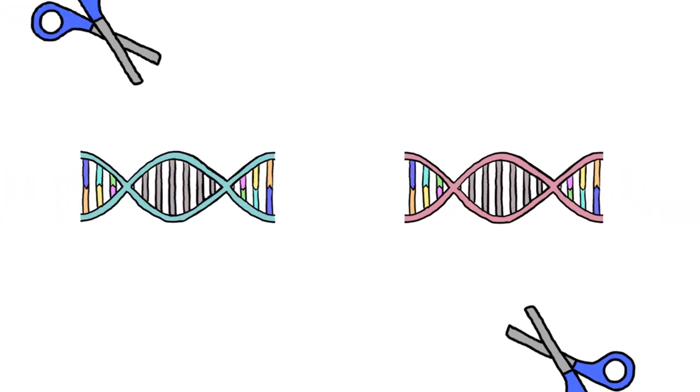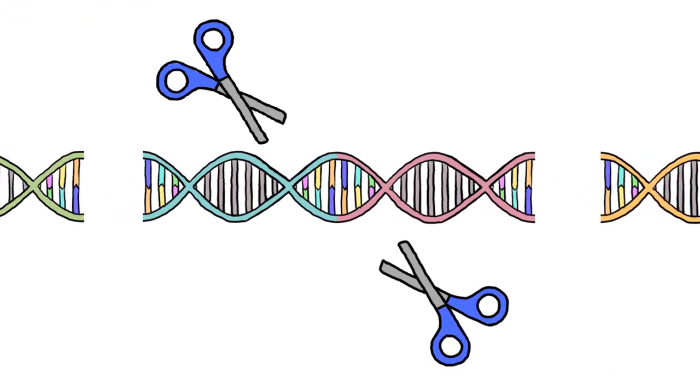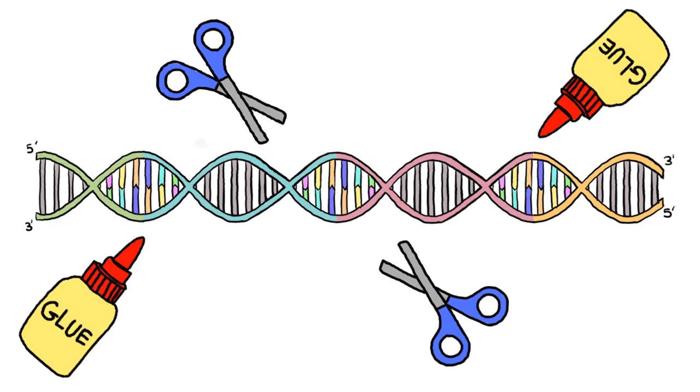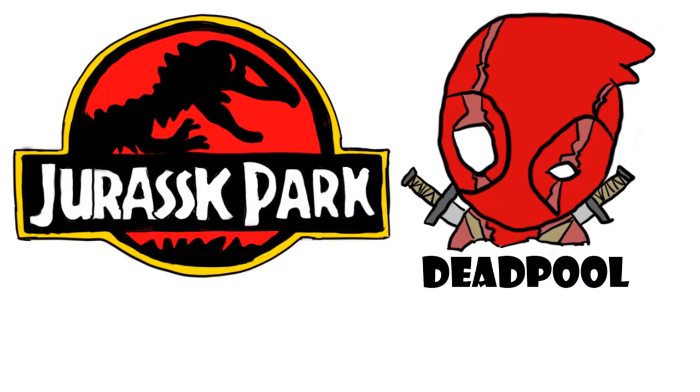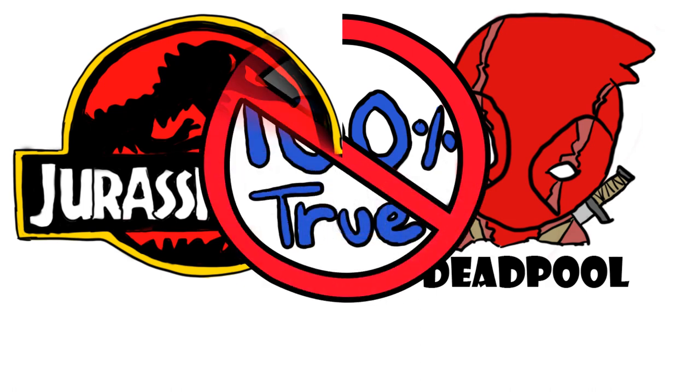The idea of being able to edit and manipulate DNA to clone or alter species has always been a fascination in films such as Jurassic Park and Marvel. Although the movies are not always quite accurate, genetic modification and cloning has been used in scientific research for decades.